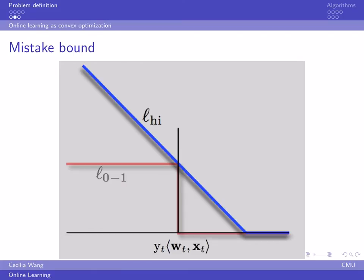This picture shows how we find a convex upper bound for the 0-1 loss function. We use hinge loss instead of 0-1, so we turn the problem into a convex programming problem.